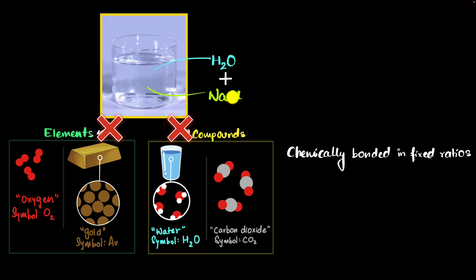Carbon dioxide is a compound because carbon and oxygen are chemically bonded in the ratio 1 is to 2. One carbon for every two oxygens. So what about salt water? Is that a compound? No, it's not. And this is important because salt and water are not chemically bonded. They are physically mixed and they don't have a fixed ratio.